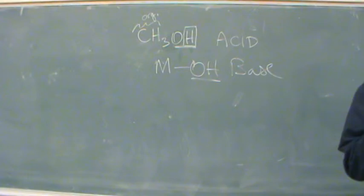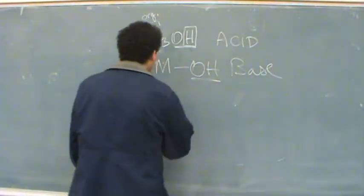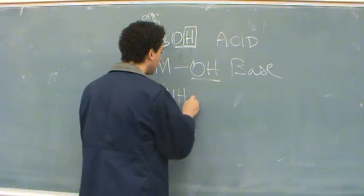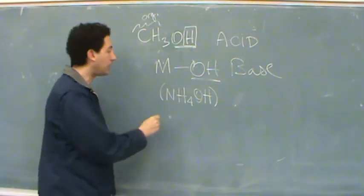bases that have hydroxides will have a metal on it. Really, there's one exception, you might say. It's the ammonium hydroxide. This is a base as well.